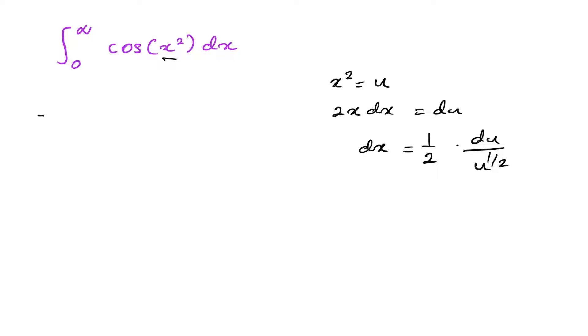Then we can substitute here. So the limit is also 0 to infinity. Here we have one-half, so one-half du over u to the one-half. I am going to take u to the one-half in the numerator, so u to the minus one-half, which I can write as one-half minus one. Then cosine of x squared becomes cosine of u, here du.